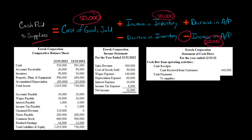Cash paid to suppliers is going to be $50,000 plus $40,000 minus $20,000, so that's going to be $70,000. In our operating section, we've got the cash receipts, and then we've got the cash payments to the suppliers on a cash basis — $70,000. That's the amount of cash this company paid to its suppliers over the prior period.